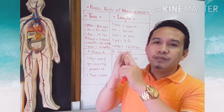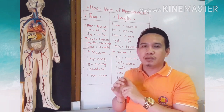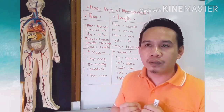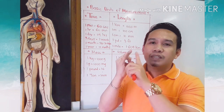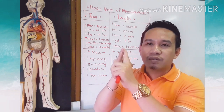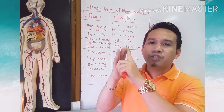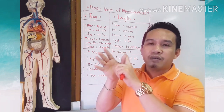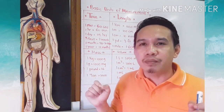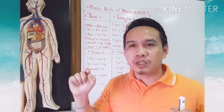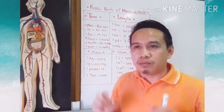What are the standard units? For length, we have meter. For time, we have seconds. For mass, we have kilogram. For temperature, we have kelvin. For electric current, we have ampere. I hope you will always remember those physical quantities with their standard units and measuring instruments.